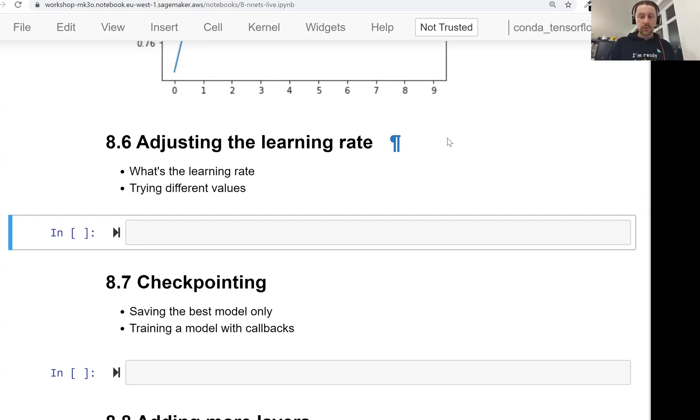Welcome back. This is lesson six of Machine Learning Zoom Camp session eight. And in this lesson, we will talk about adjusting the learning rate for our model.